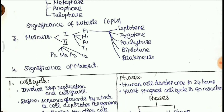In meiosis phase 1, there are prophase 1, metaphase, anaphase, and telophase. But prophase 1 has some specialities — it includes Leptotene, Zygotene, Pachytene, Diplotene, and Diakinesis.